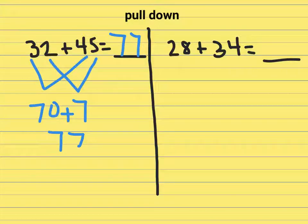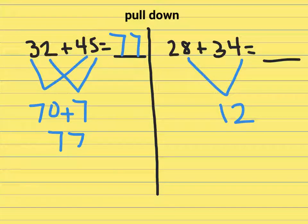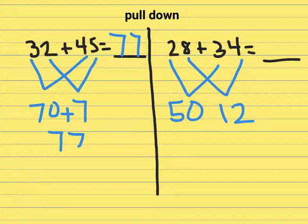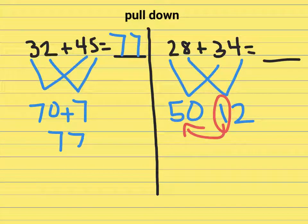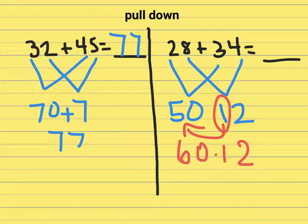If they look at 28 plus 34, this one will have regrouping. They'll add the 8 and the 4 and say that's 12. Twenty and thirty, that's 50. And it's at this point they need to say okay, I've got a ten. I'm pushing them over here. 50 is now 60, 12 is now 2. Final answer is 62.